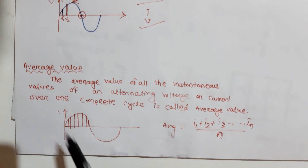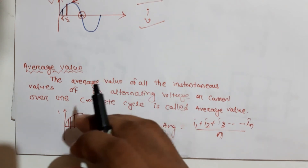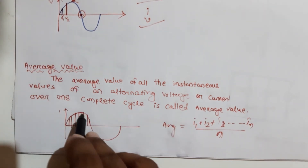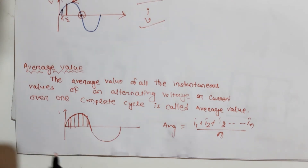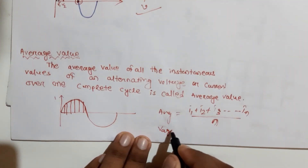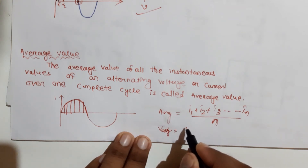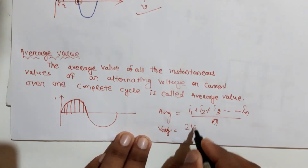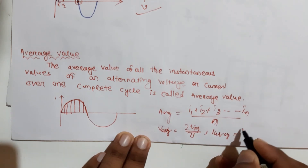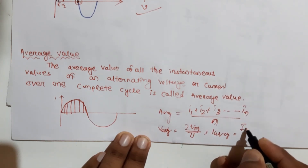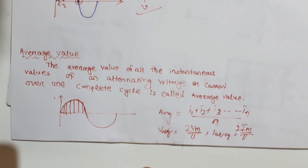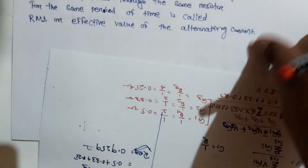For a sinusoidal waveform, we consider only the positive half cycle to find the average value. The formula for average voltage is: V_average = 2Vm / π. Similarly, for current: I_average = 2Im / π. This is the average value for a sinusoidal alternating quantity.